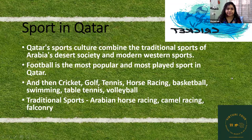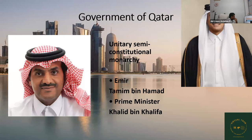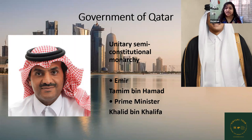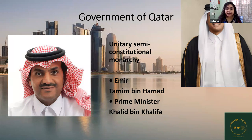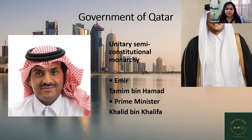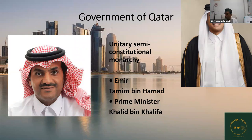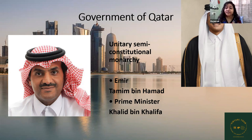The government of Qatar is a unitary semi-constitutional monarchy. They still have princes and kings, but they also have a constitution which they follow — both work hand in hand to run the country. The Emir is Tamim bin Hamad, and the Prime Minister is Khalid bin Khalifa. These names are a bit tough to pronounce but now you know them.